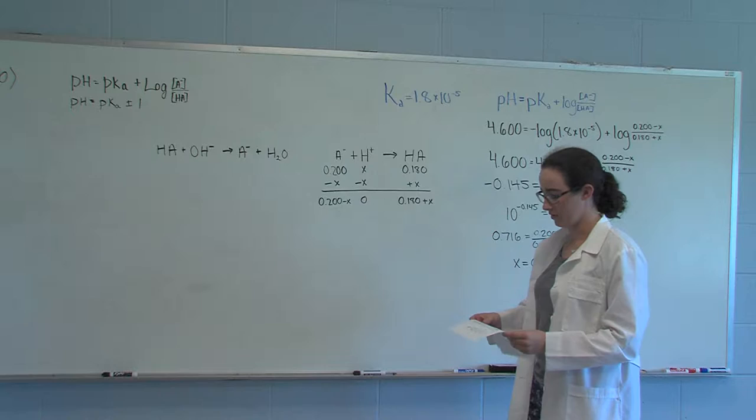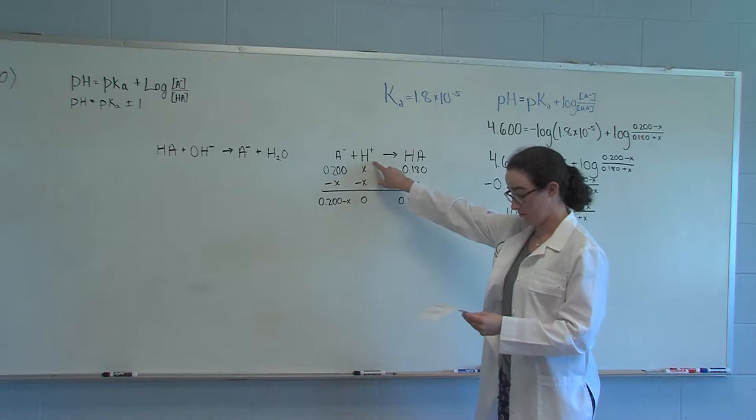For part Bi, the pH we want to reach is within plus or minus 1 of the pKa. Because the pH is within this buffer region, we know that all the H plus will react.